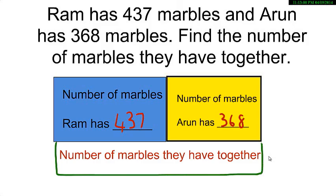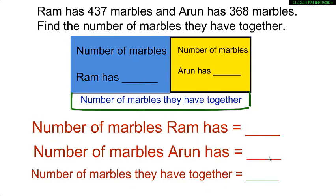Now this green rectangle will give me the number of marbles they have together. Is it not 437 plus 368, or their sum? Using this model you can work out your answer as follows. The number of marbles Ram has is 437, which I will note in my working.